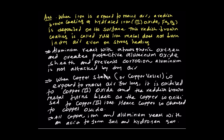The aluminium is attacked by dry air and water, but is protected by a layer of aluminium oxide that forms on its surface. This aluminium oxide layer prevents further corrosion and protects the metal beneath.